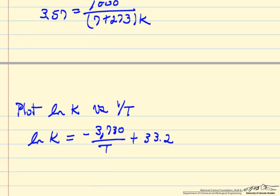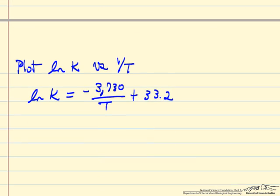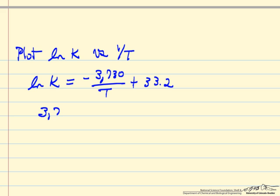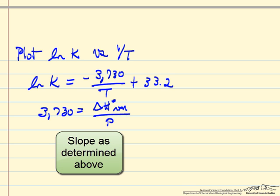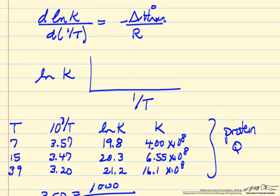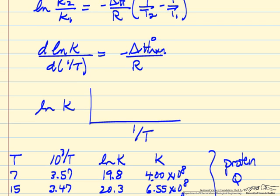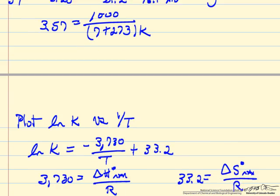So this is a fit that, of course from our equation of how log of k changes with the inverse temperature, means that 3730 is equal to delta H of reaction, standard conditions, divided by the gas constant. And 33.2 is equal to delta S, standard conditions for the reaction, divided by R. And this results if we look at the equations.